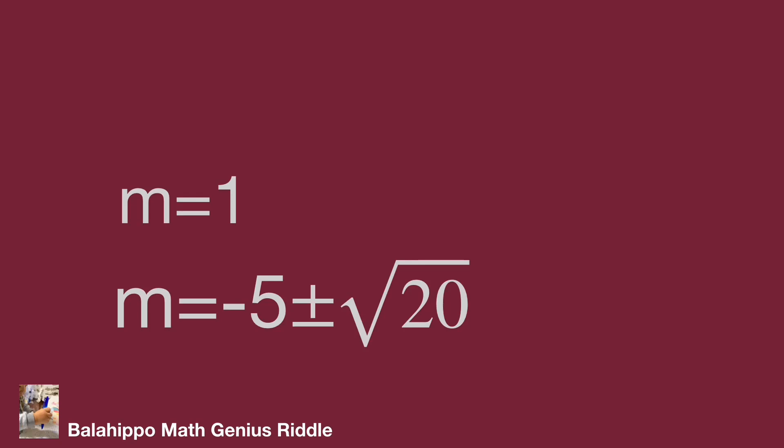That's all answers for m. But x and y are integers. So m equals minus 5 plus minus square root of 20 cannot meet the criteria. We discard such non-integer solutions. We can utilize the value to find x and y.